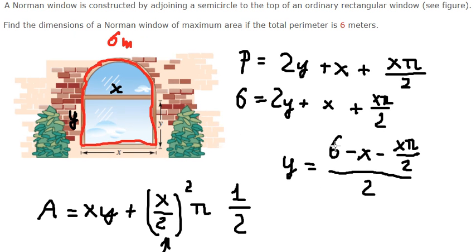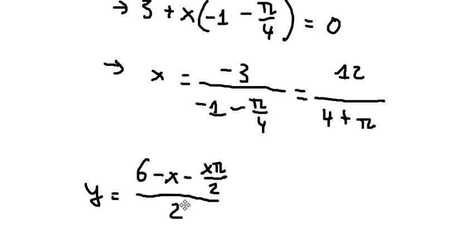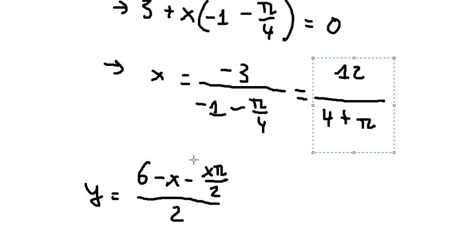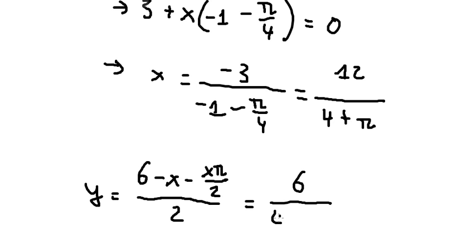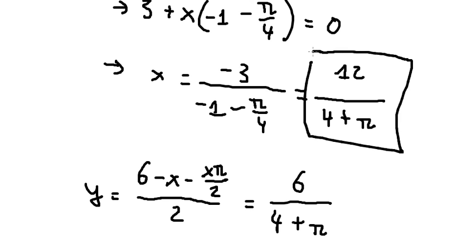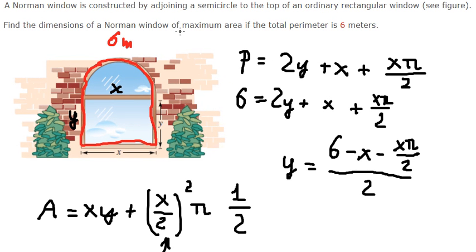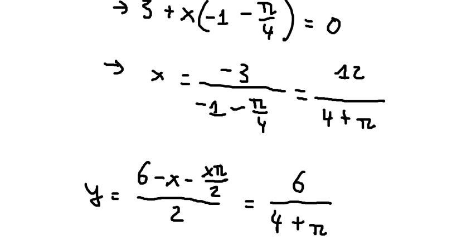If we want to find the value of y, we need to go back and substitute s into the earlier expression for y. We put this value in to get the final answer. This is the dimension to make the window have the maximum area. This is the end, thank you for watching.